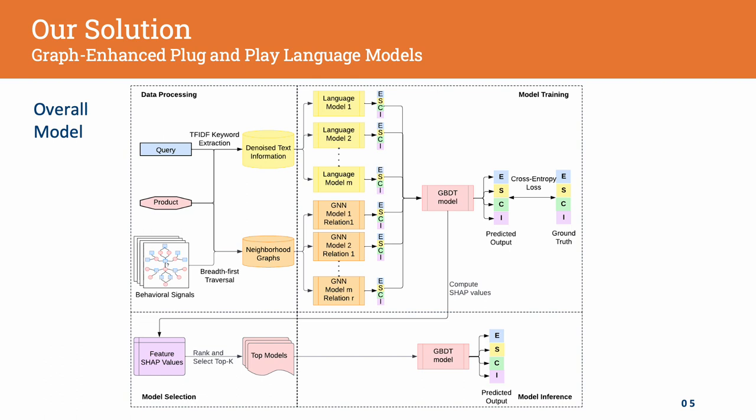In this framework, we note that the SHAP model over GBDT can provide us with the importance of each feature and help us select the top models to be deployed in production at each maintenance time point.